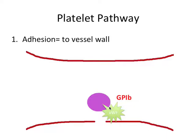Note that adhesion also occurs between exposed collagen of the endothelium and a complex known as glycoprotein 1a/2a, but that's a bit more complicated than we need to get into right now. The important thing is that for adhesion to the vessel wall — our first step — we have a platelet, von Willebrand factor, and they're connected by glycoprotein 1b.